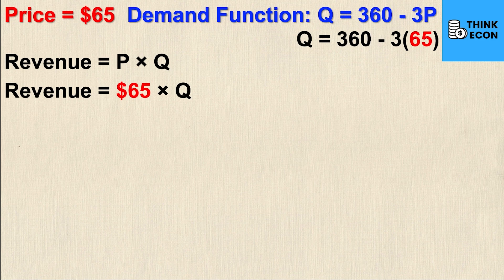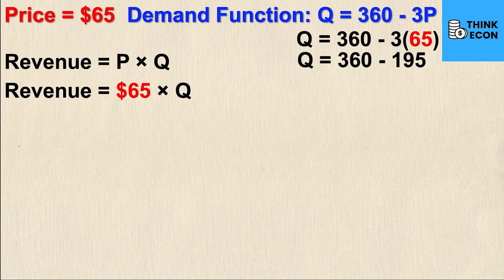Q is equal to 360 minus 3 times 65. Simplifying further I get Q is equal to 360 minus 195 and then finally doing the subtraction I get Q is equal to 165. So this is the quantity of units that will be sold at a price of $65.